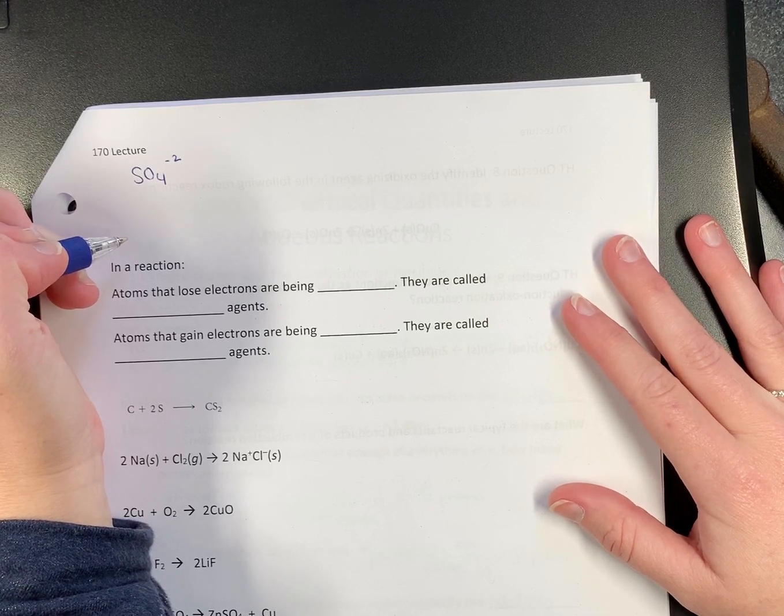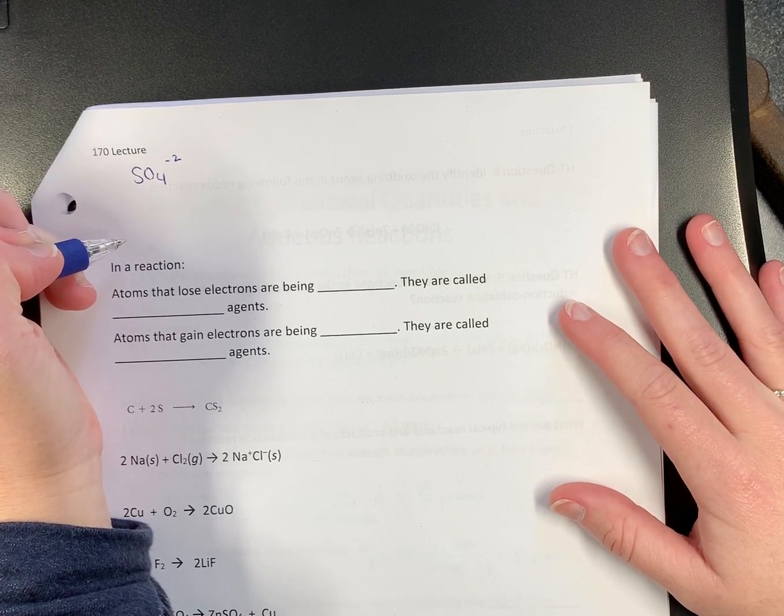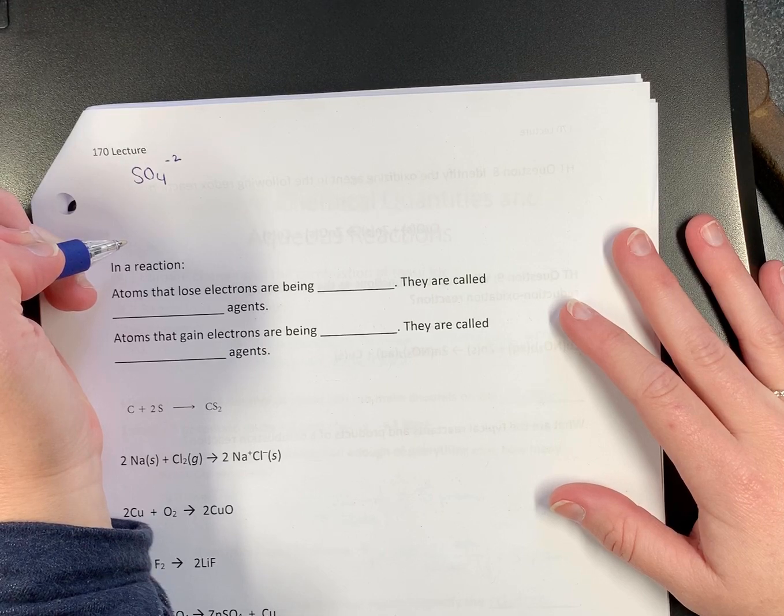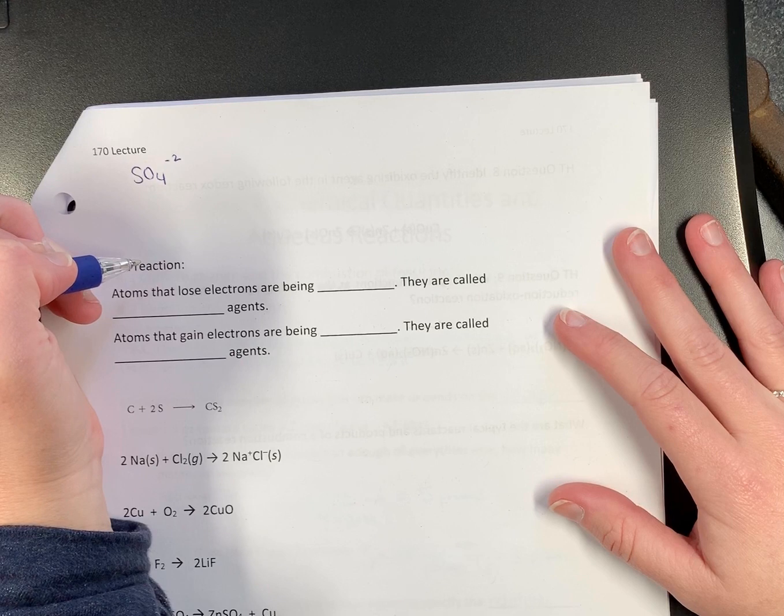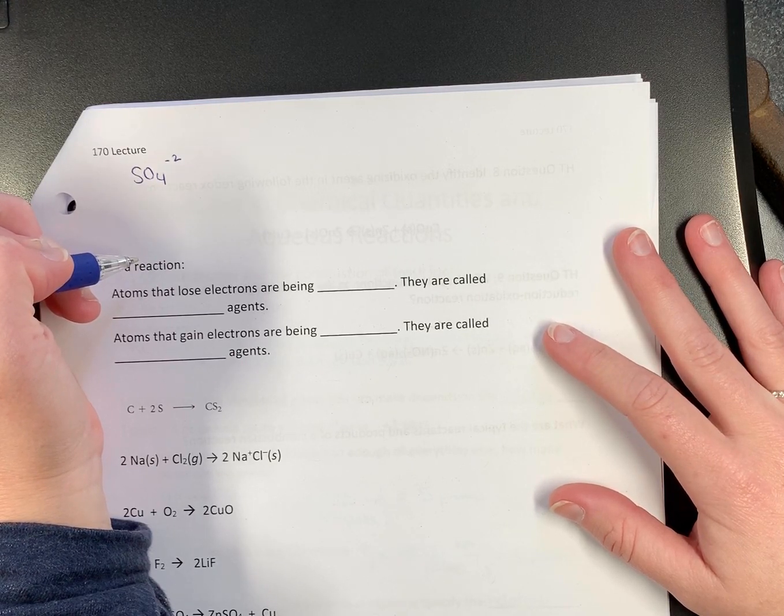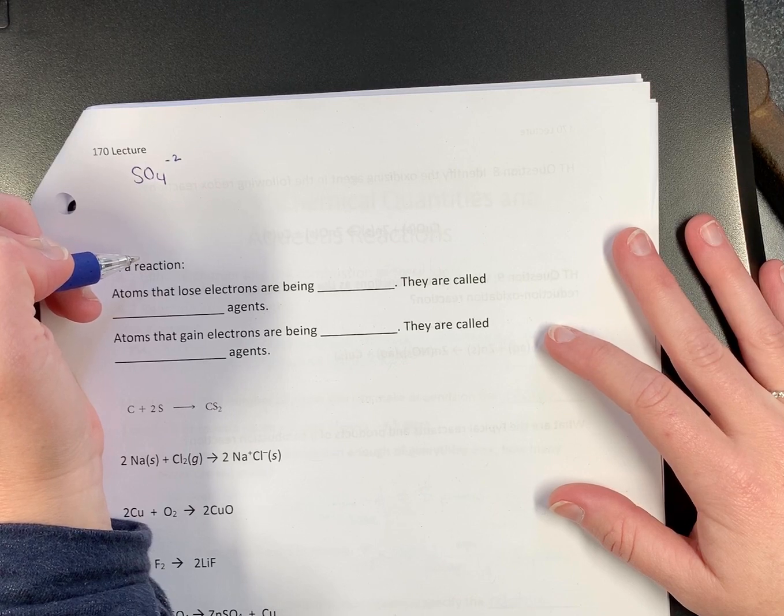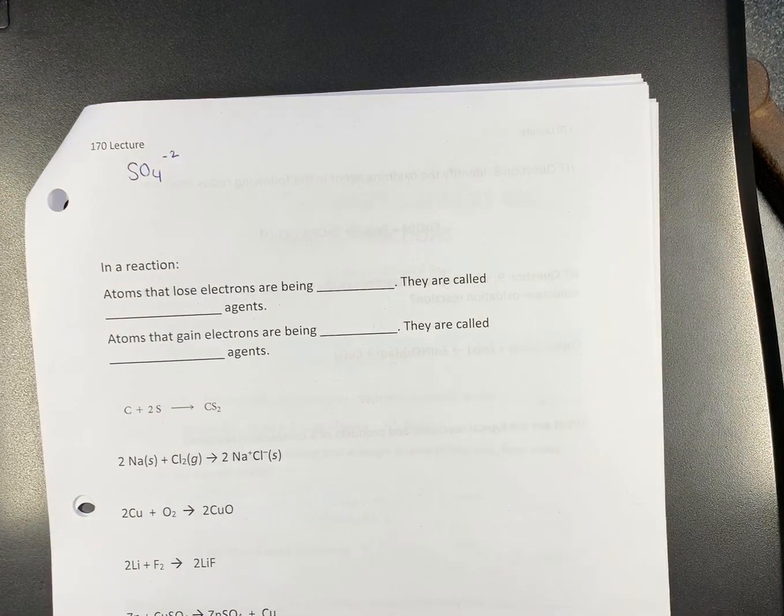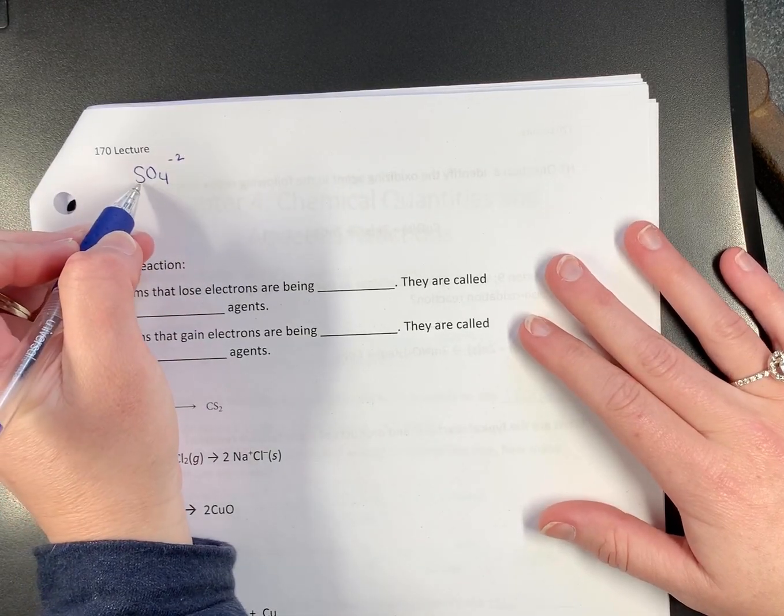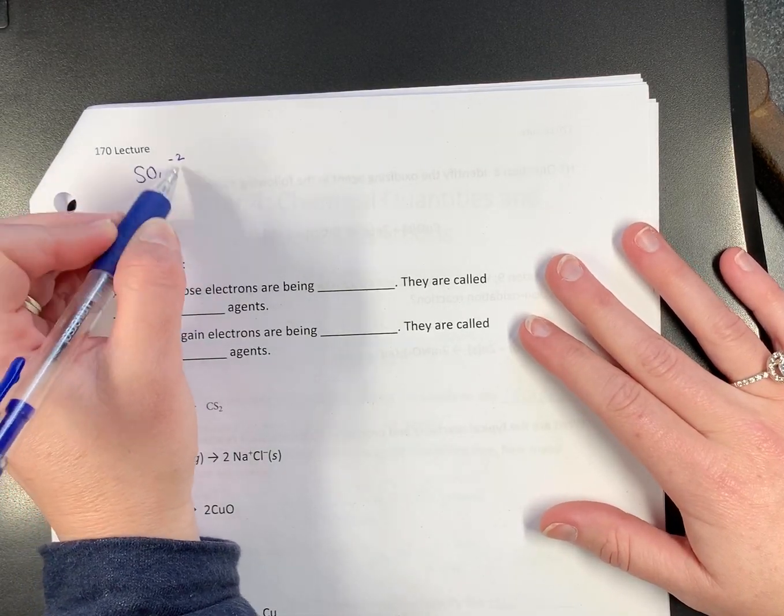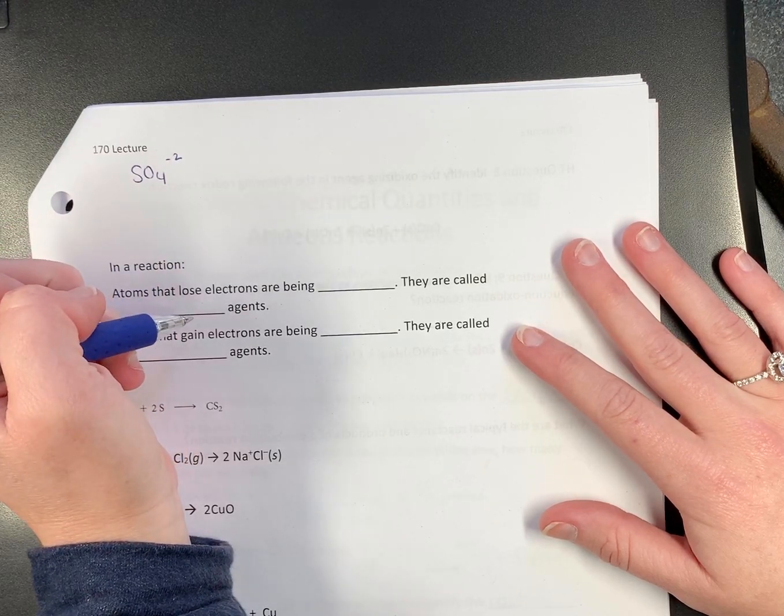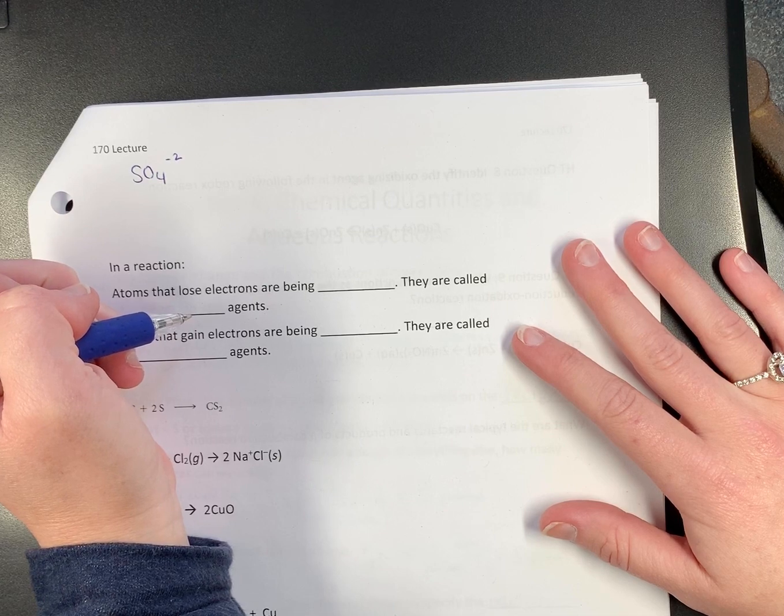Do we have any free elements? No. Do we have any monatomic ions? No. This is a polyatomic ion. Do we have any metals? No. Sulfur and oxygen are non-metals. So we got to go by the table. Our total number of charges here of our oxidation numbers needs to add up to what number? Negative 2.